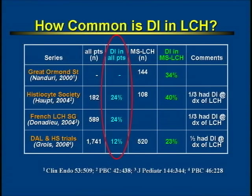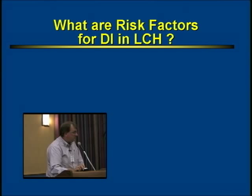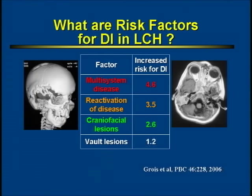Which patients with LCH are at risk for developing diabetes insipidus? A study from Nicole Grau and colleagues in Vienna identified three risk factors: patients with multi-system disease, patients who have reactivation of their disease, who are much more likely to develop diabetes insipidus, and patients who have craniofacial lesions — around the orbit or temporal bone — who are two-and-a-half-fold more likely to develop diabetes insipidus. In contrast, patients with vault lesions in the rest of the skull have only very slightly increased risk, which may not be significant.